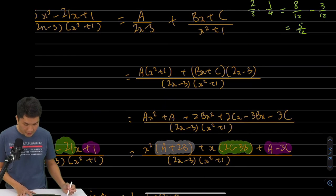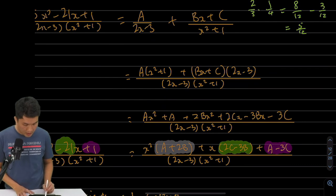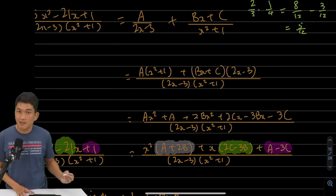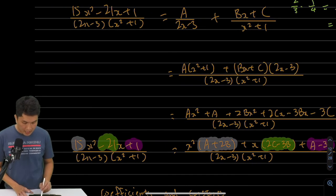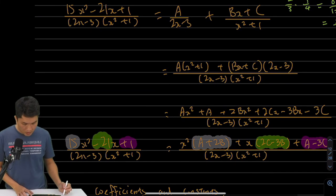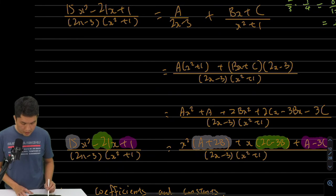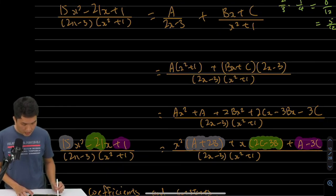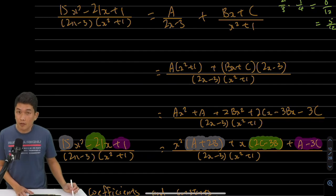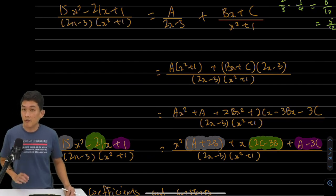And then the next step is to group everything together. These are all the terms in x squared. These are all the terms in x. These are all the constant terms. And then you know what to do next is to compare with our original rational function over here. And I can say that, hey, this must be 15 because this is the coefficient of x squared. This must be negative 21 and this must be positive 1. And then that's where we have three equations, three unknowns.